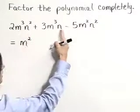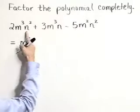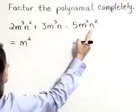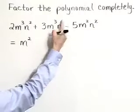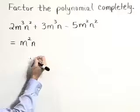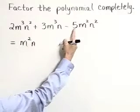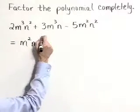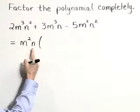As we look at the n, we've got an n squared, n to the first, and an n squared. Each term has at least a factor of n to the first power. There is no common factor for these coefficients other than one. So our greatest common factor is m squared n.